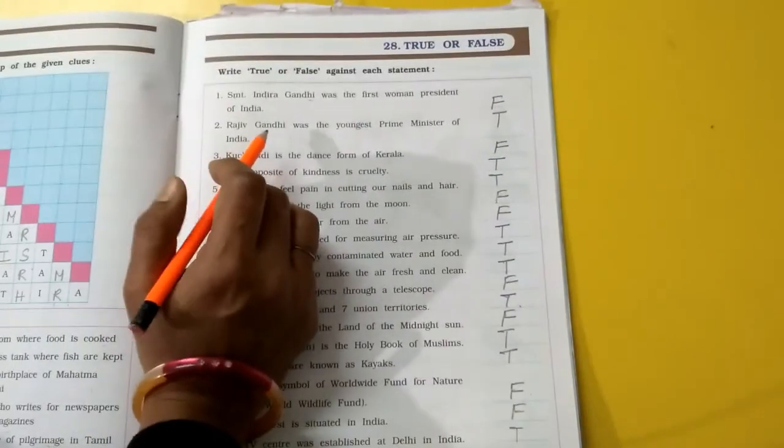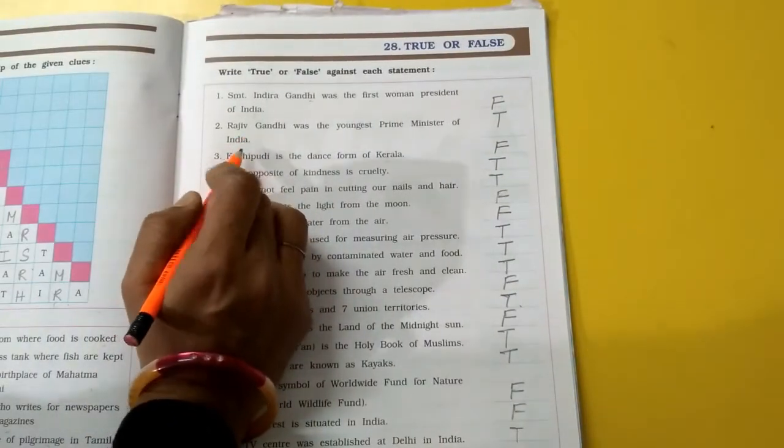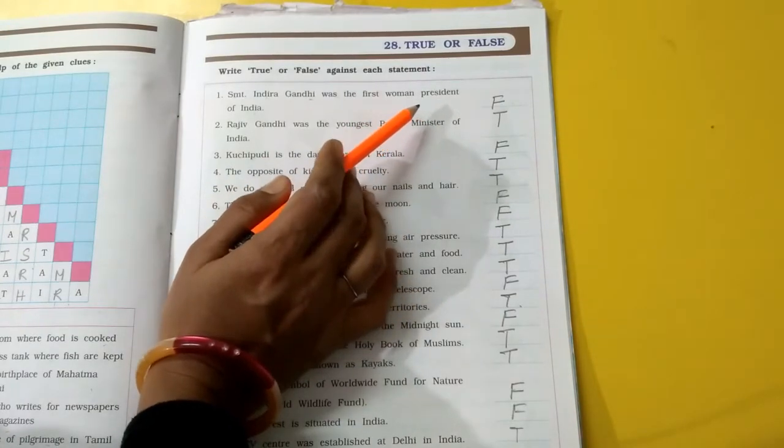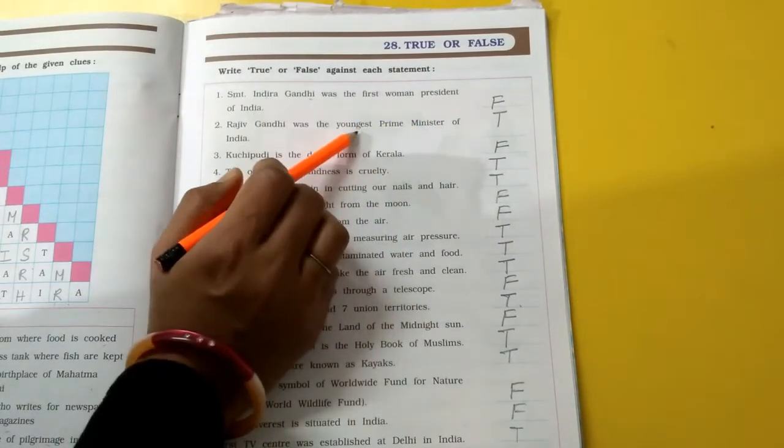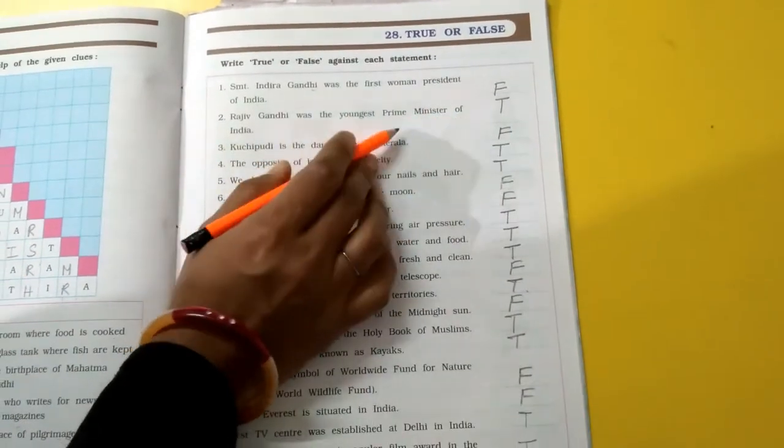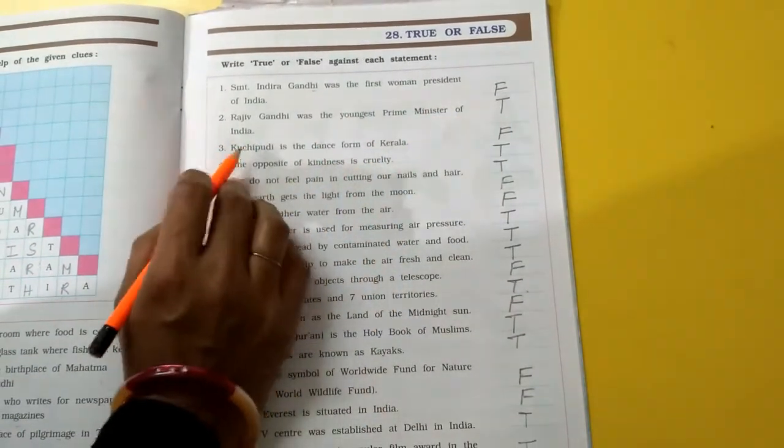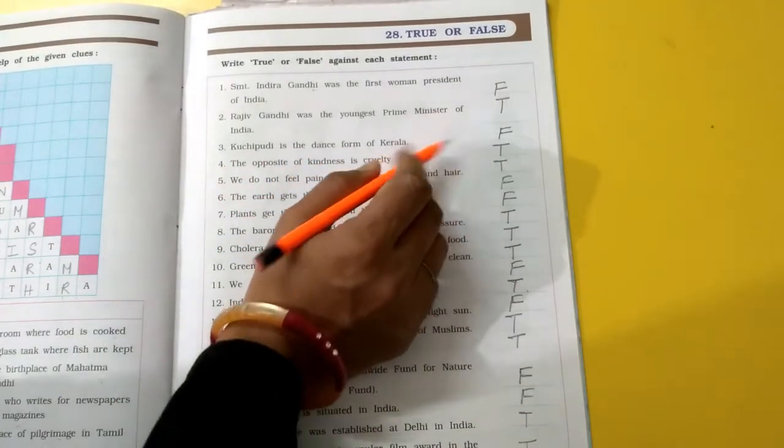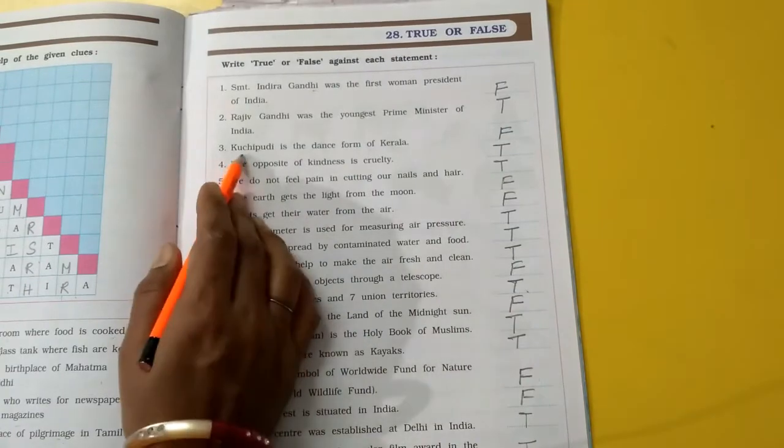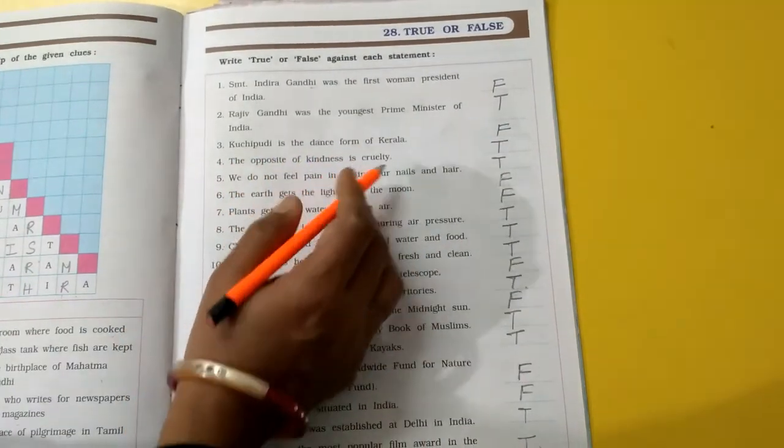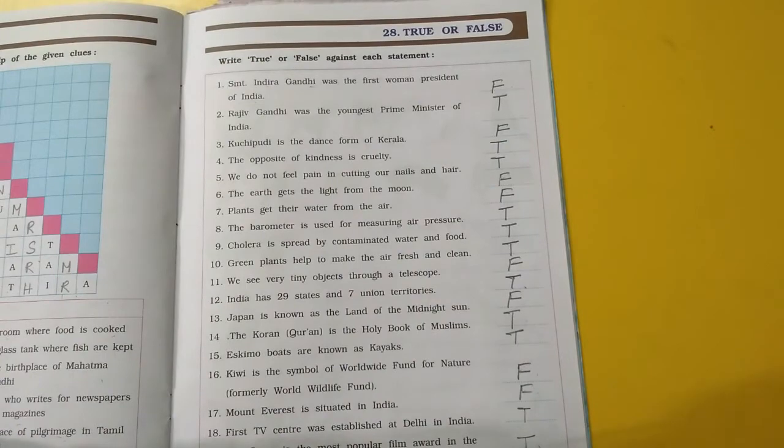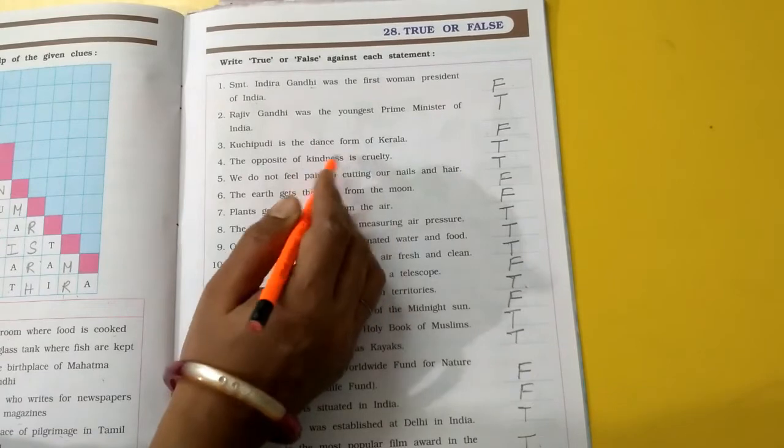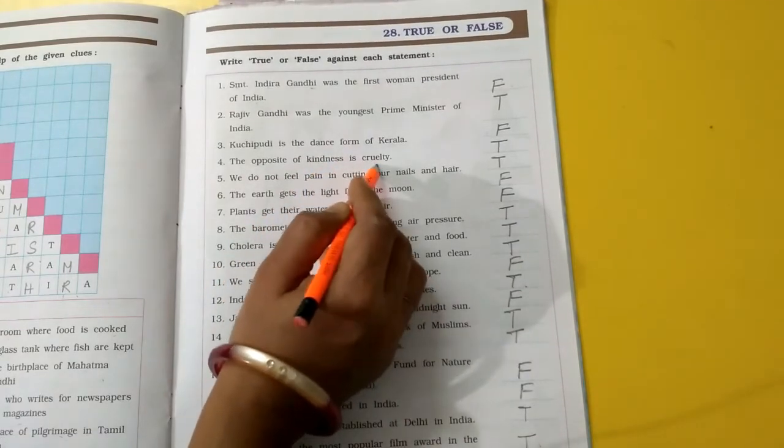Rajiv Gandhi was the youngest prime minister of India. Wo youngest matlab ekdam jawan prime minister tha, sabse young prime minister tha. True. Kuchipudi is the dance form of Kerala. No, wo galat hai. False. The opposite of kindness is cruelty. Kindness ka opposite cruelty hota hai. True.